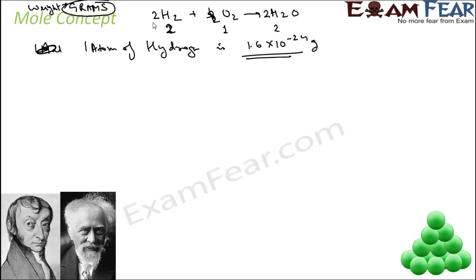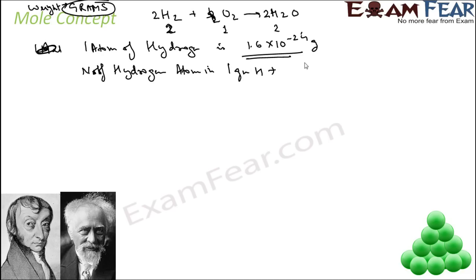So in chemistry, in the lab, we talk about numbers — huge numbers — 1 gram, 2 grams. The weight of one atom is 10 to the power of minus 24. So with this calculation, if the weight of one atom of hydrogen is that many grams, then the number of hydrogen atoms in one gram of hydrogen will be: 1 divided by 1.6 × 10⁻²⁴, and gram over gram cancels. Solving this you get 6.2 × 10²³ atoms.